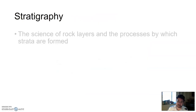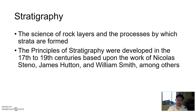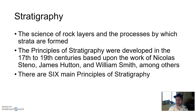When we're doing this, it looks at something called stratigraphy. Stratigraphy is the science of rock layers and the process by which strata layers are formed. The principles that dictate stratigraphy were developed from the 17th to 19th centuries — the 1600s to the 1800s — based upon the work by Nicholas Steno, James Hutton, William Smith, among others. There are six main principles of stratigraphy that help us figure out what's oldest to youngest.